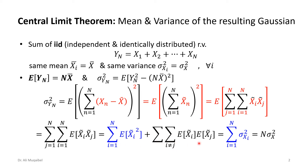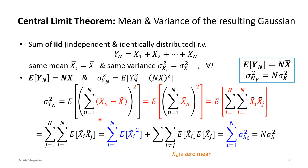When i does not equal j, the variables are independent, so the expected value of x-tilde-i times x-tilde-j equals zero, because x-tilde is x minus its mean. When i equals j, we get the expected value of xi squared, which is the variance of xi. Summing from one to n gives n times sigma-x-squared. So the conclusion is: the resultant variance is n times the individual variances, and the resultant mean is n times the original expectation.